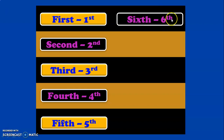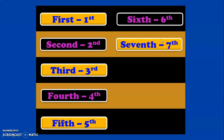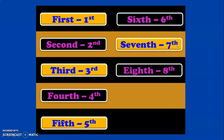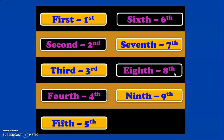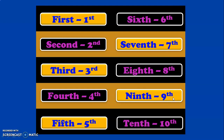Seventh is represented by 7 followed by 'th'. Eighth is represented by 8 followed by 'th'. Ninth is represented by 9 followed by 'th'. And tenth is represented by 10 followed by 'th'. These are almost similar to the numbers 1 to 10, but with a few variations in the number name.